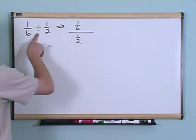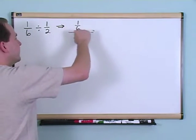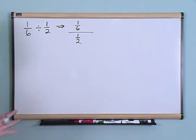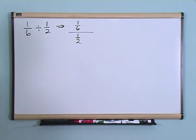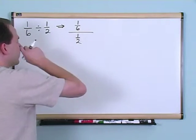So here I've got one sixth divided by one half. I'm just showing you what they're really asking you to do. I'm kind of writing it in a different form, one sixth divided by one half.